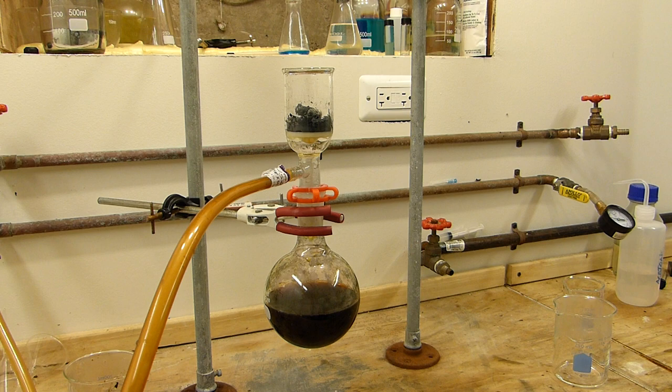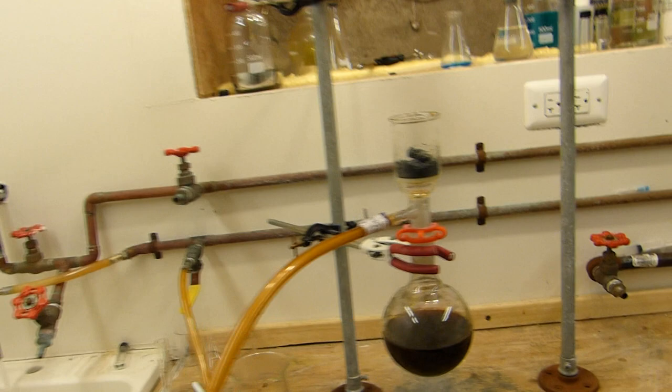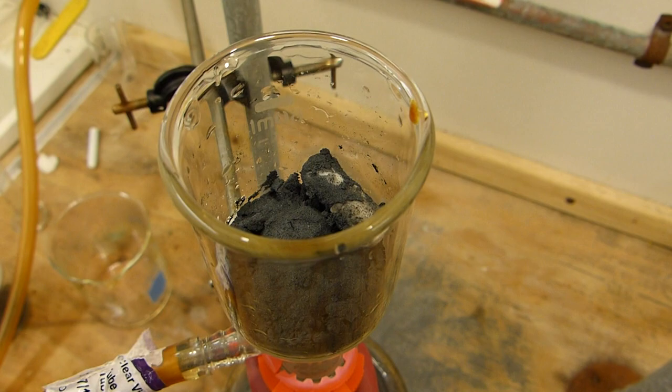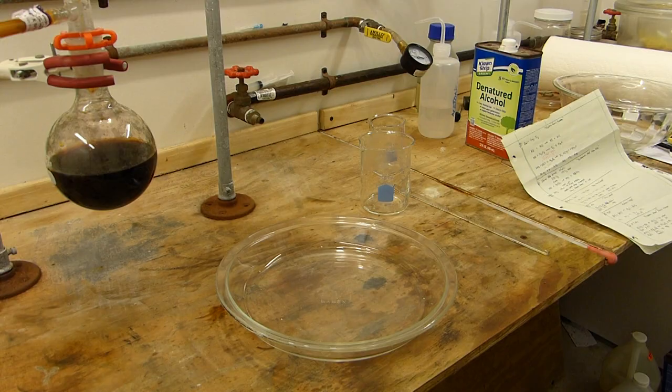Alright and there we go. Our filtration is essentially complete. I'll just leave this on the vacuum for a little while to continue to pull the last remaining bits of water out. And that's what it looks like. We can retrieve the stir bar later.